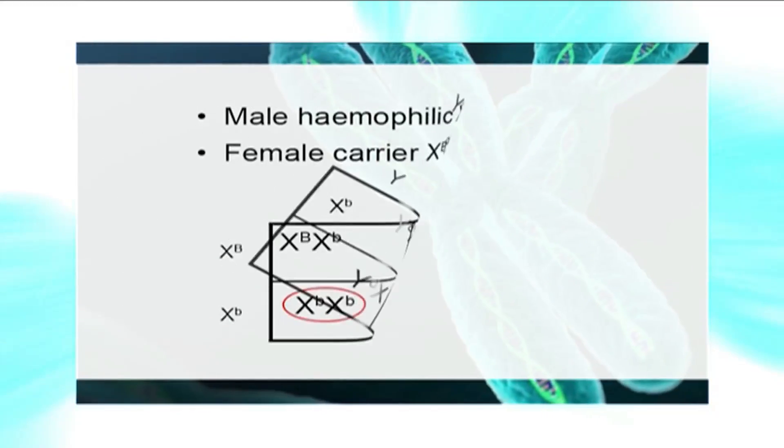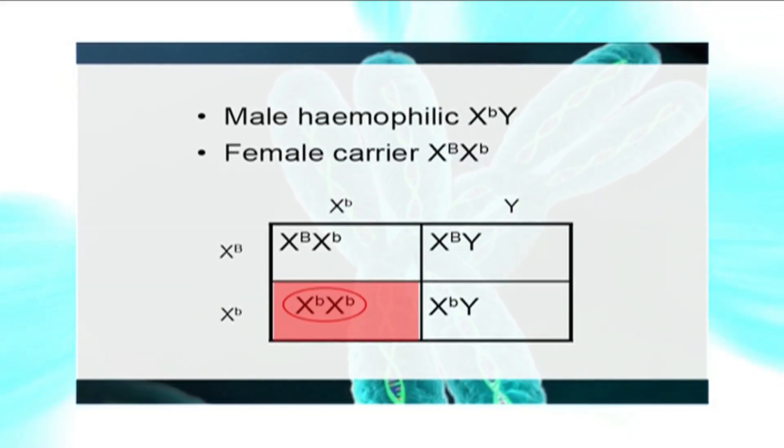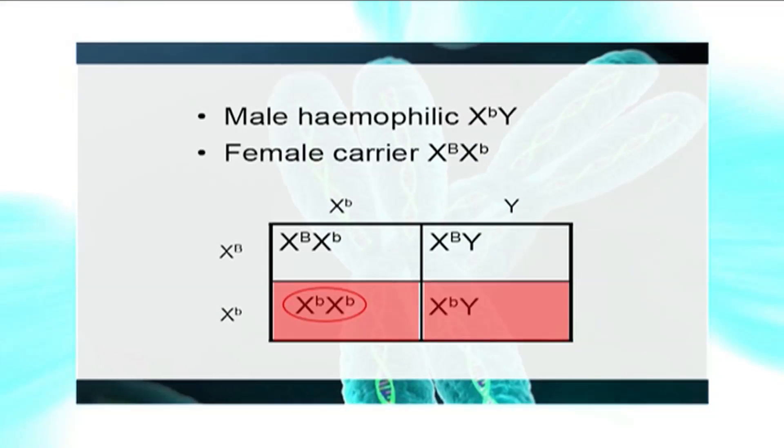Now let's check another case to get a hemophilic female. For this we need two recessive alleles, meaning the father should be hemophilic and the mother should be a carrier. From the Punnett square, we can see that we can have both a hemophilic female and a hemophilic male.